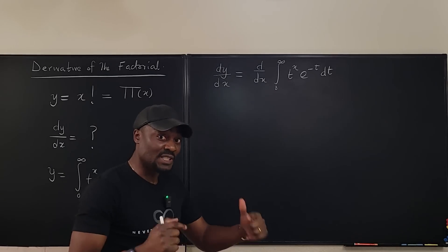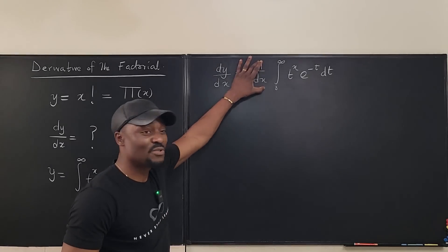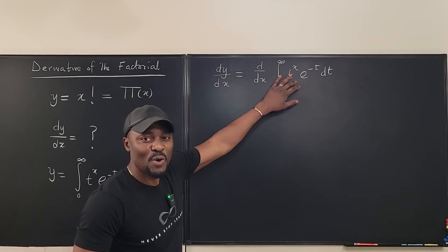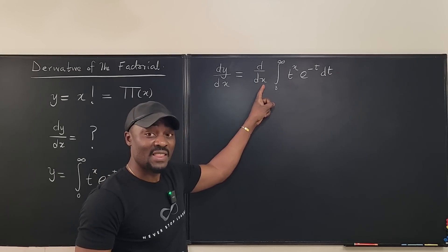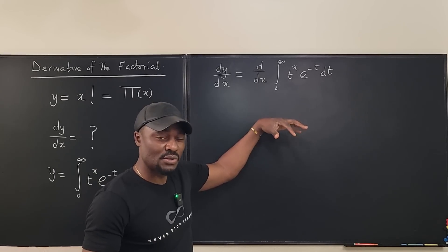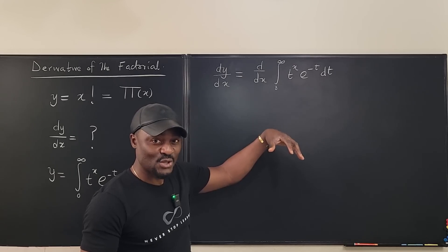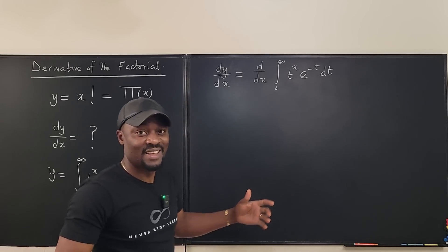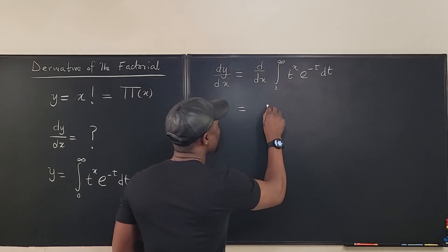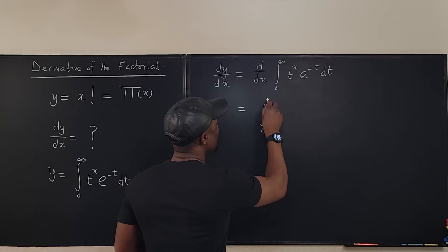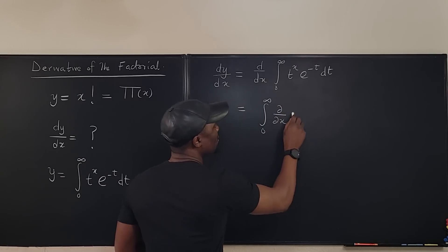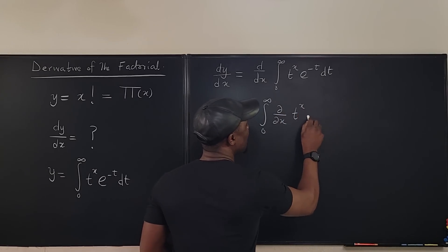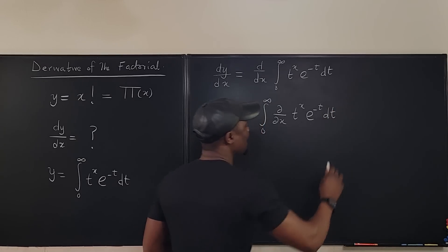And what Leibniz integral rule says is you can move this derivative inside. But when you move it inside, you will only be taking the derivative with respect to x. And that's what we call partial derivative with respect to x. So we just say it's partial x. Now this is the same thing as the integral from zero to infinity of the partial derivative of this function just with respect to x. So we're going to write t to the x e to the negative t dt.